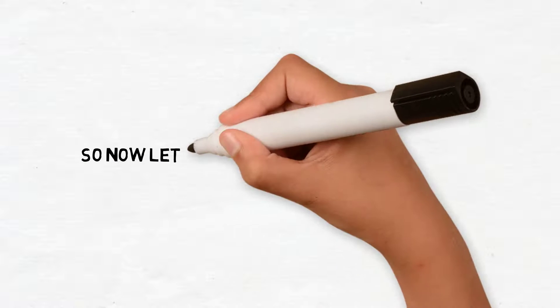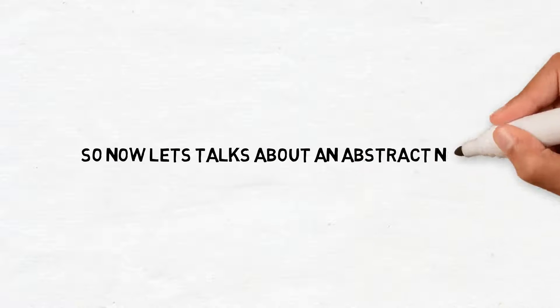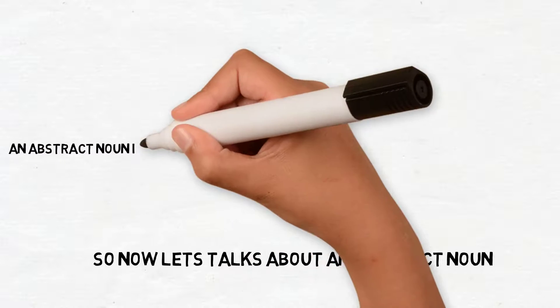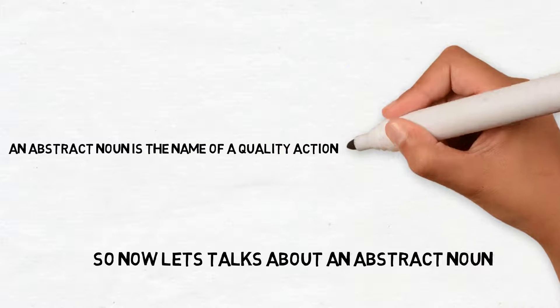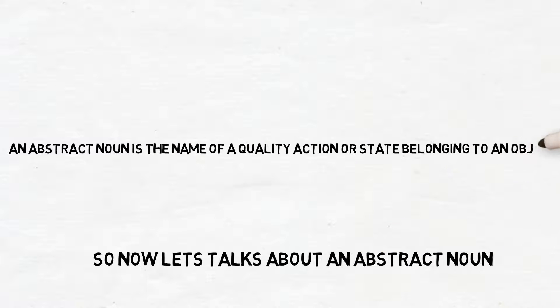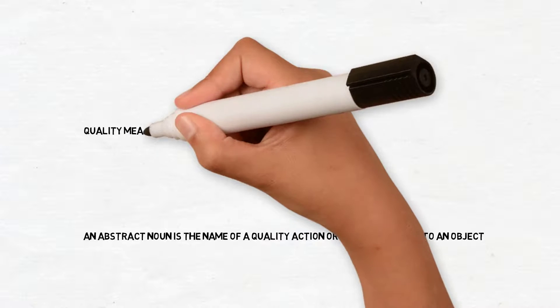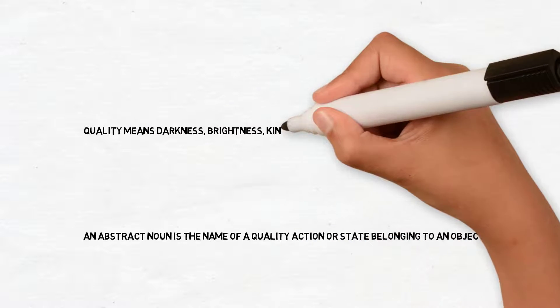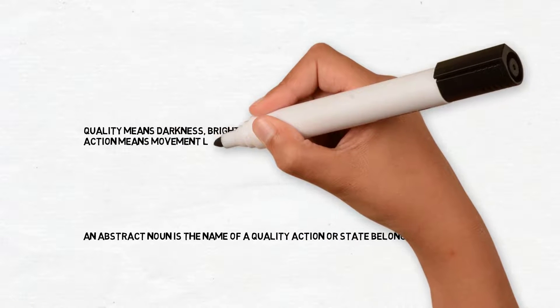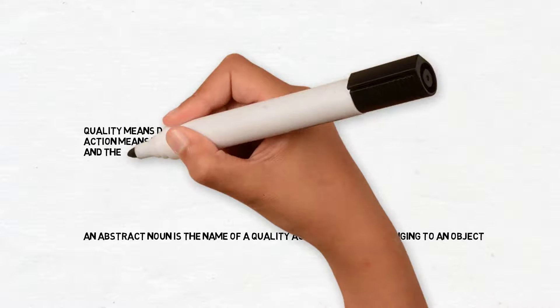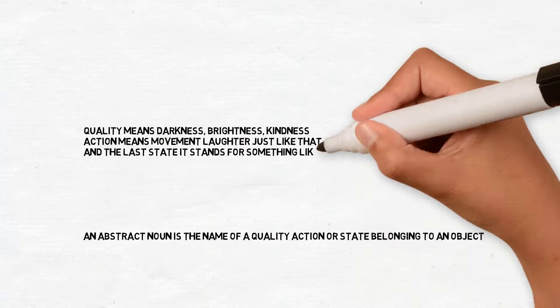So, now let's talk about abstract noun. An abstract noun is the name of a quality, action, or state belonging to an object. Quality means darkness, brightness, kindness. Action means movement, laughter, just like that. And the last, state, it stands for something like youth, boyhood, childhood, death.